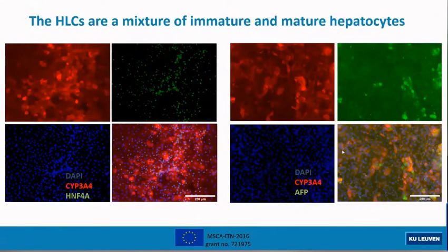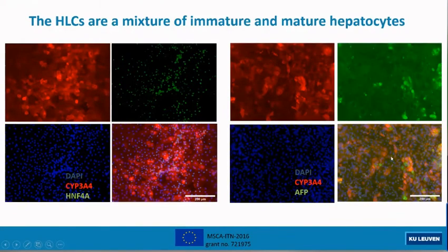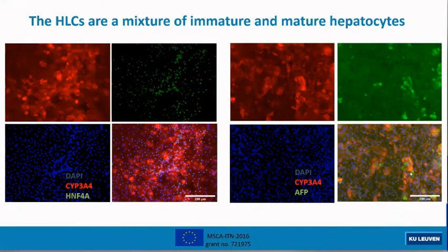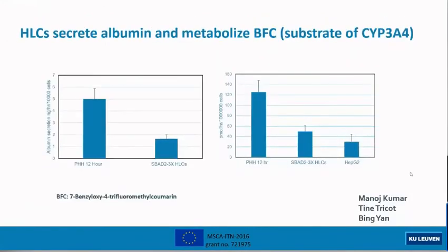That was with qPCR, and this is with immunofluorescence. We confirmed expression of CYP3A4, HNF4-alpha which is a hepatocyte nuclear factor, and also alpha-fetoprotein. The majority of cells appear slightly heterogeneous in maturity — cells with more CYP3A4 expression appear to have less AFP expression. They also secrete albumin as shown using ELISA, and they metabolize BFC, which is a substrate of CYP3A4. CYP3A4 activity is higher than HepG2 but about half that of primary hepatocytes plated for 12 hours, and albumin is about one third of primary hepatocytes plated for 12 hours, so maturity is not yet as high as primary hepatocytes.